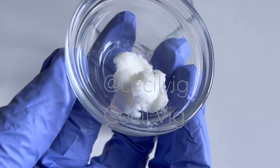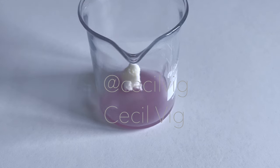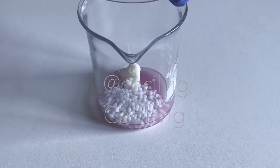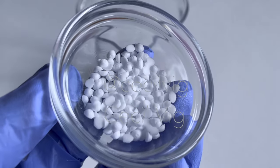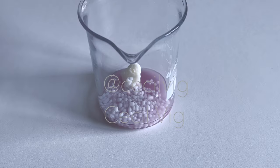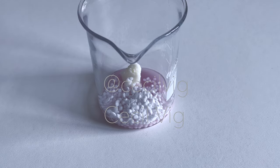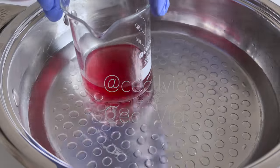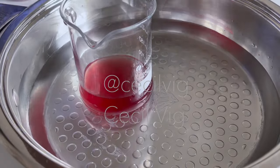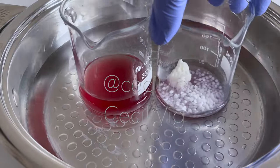Add the shea butter to the oil. Add the BTMS-50 to the oil as well. I also add the cetyl alcohol to the oil. Then I place the beaker containing the water phase and the beaker containing the oil phase in a water bath.